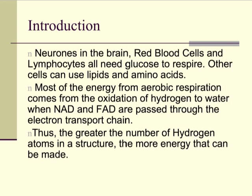The cells that can only use glucose are neurons in the brain in particular, red blood cells, and lymphocytes — which are white blood cells from the previous module. They all have to have glucose as their respiratory substrate. Other cells can use lipids, which are fats, and amino acids from proteins, as fuel.